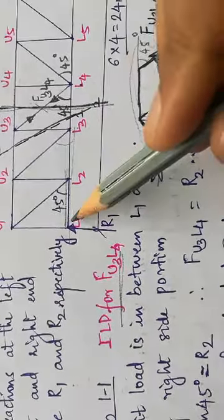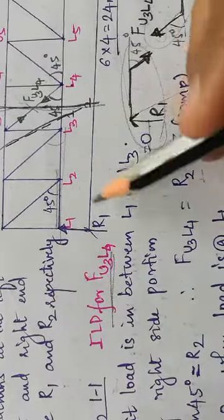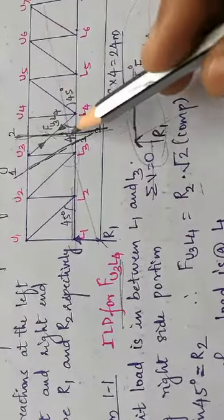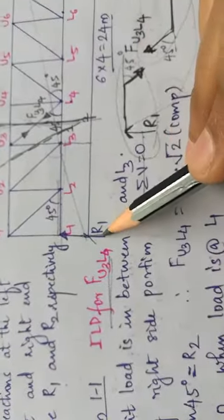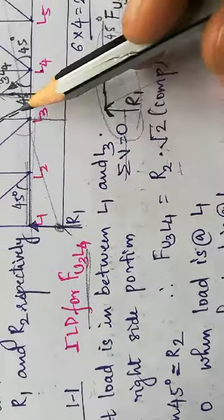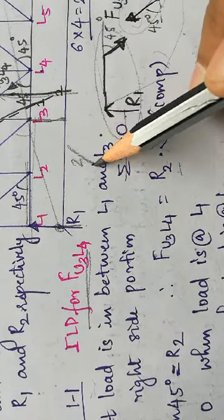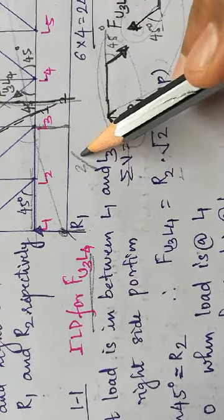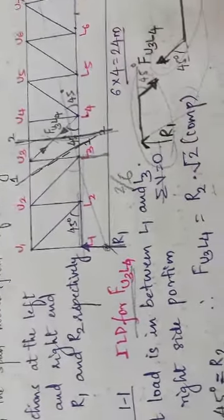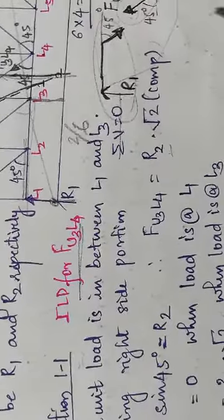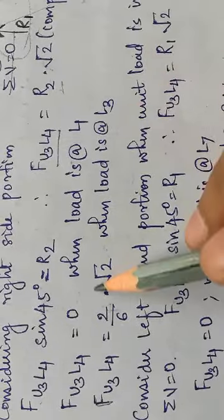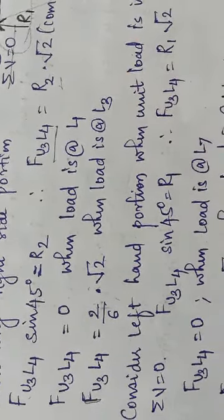Now let us calculate the ILD values for R2. When the load is at L1, the ordinate is 0. When the load is at L3, the ordinate is 2/6, since there are 6 equal parts. So the force in u3L4 when the load is at L3 is (2/6) × √2.